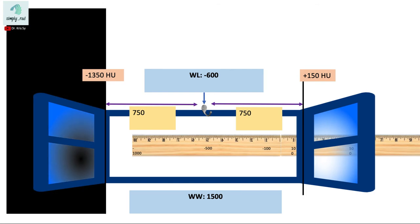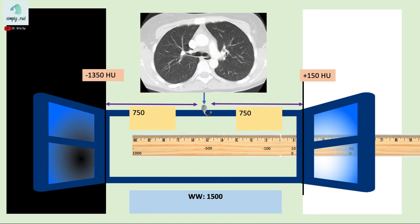So all of the structures with the Hounsfield units lower than this value will be displayed as black, while all the structures more dense than 150 Hounsfield units will be displayed as white. For example, in this lung window.